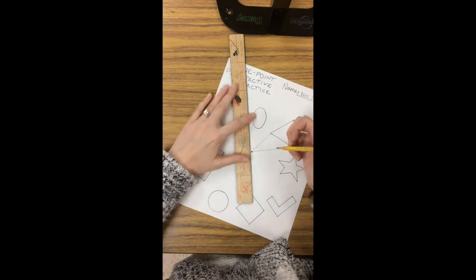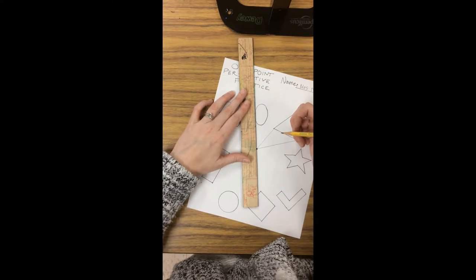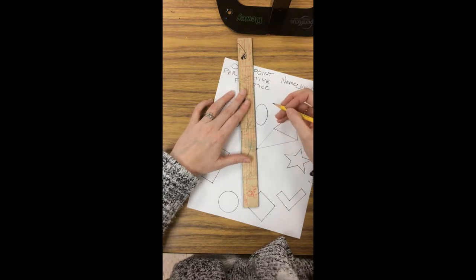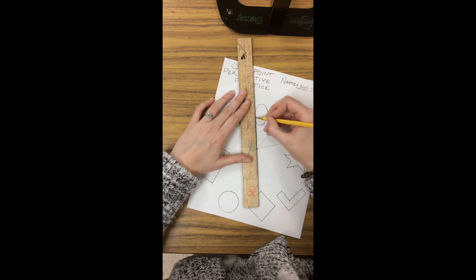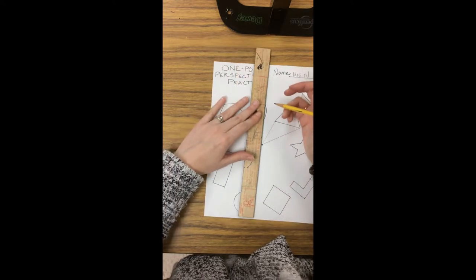If you have a round shape, you're just going to go from the very left edge. So I'm moving my ruler until it's just barely touching the oval, and then I'm drawing a line to the vanishing point. I'm also going to do that on the right side.